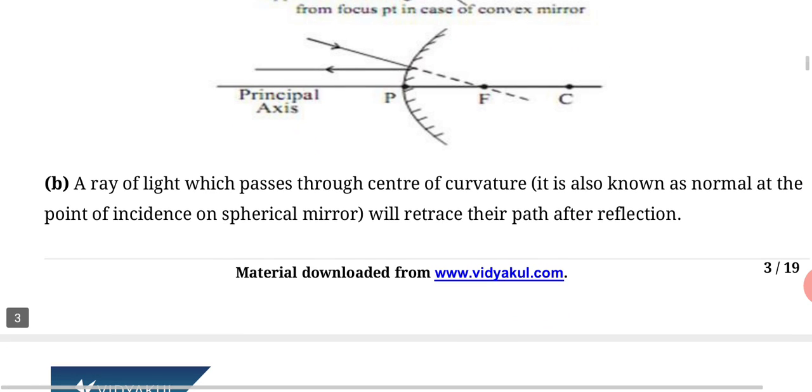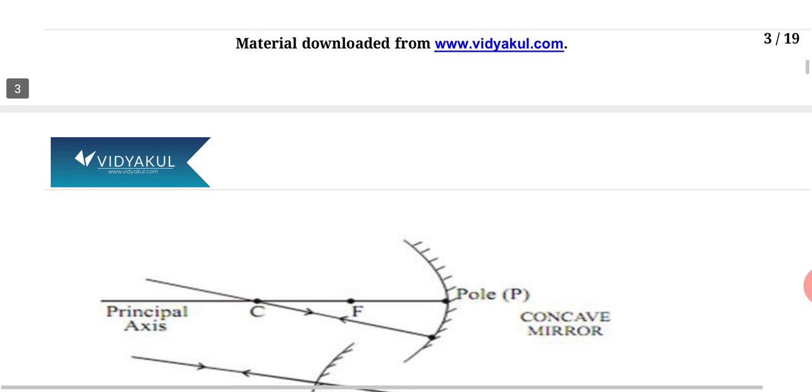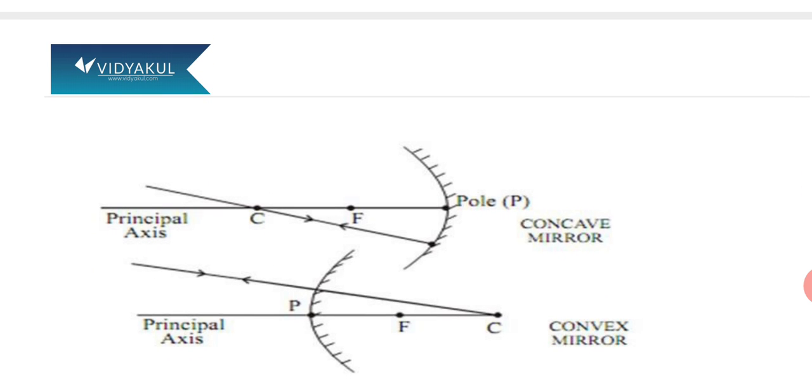Now we talk about rule second: the ray of light which passes through center of curvature will retrace their path after reflection. The line coming from center of curvature goes back on the same path. You can see in concave and convex diagrams below.